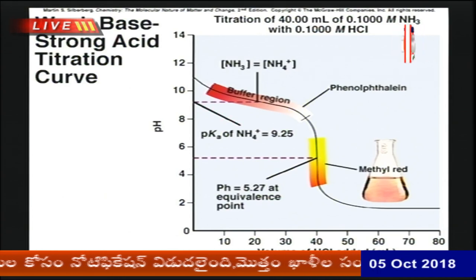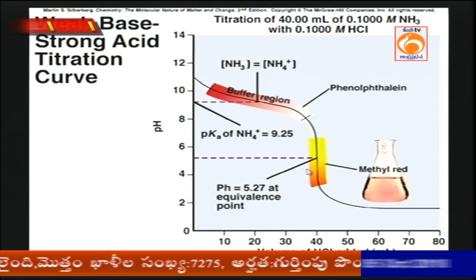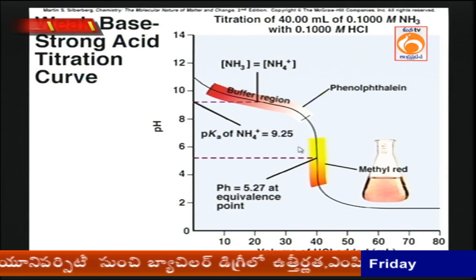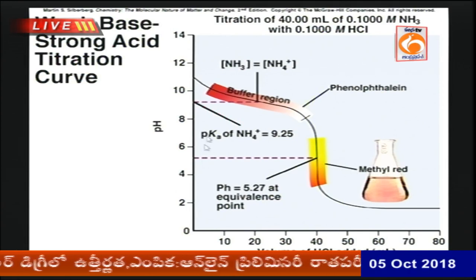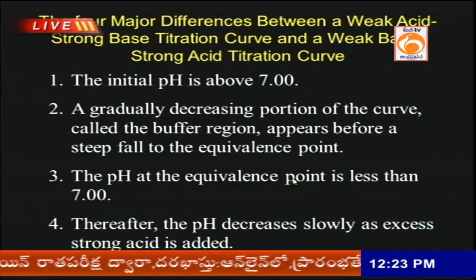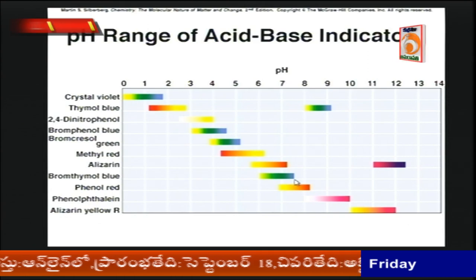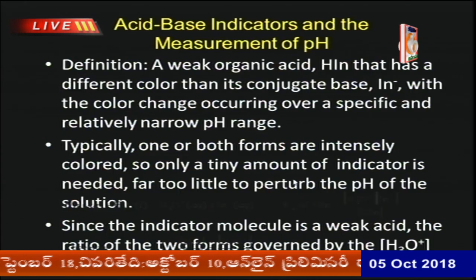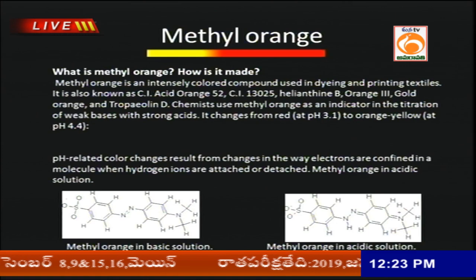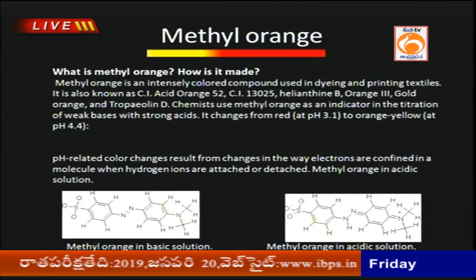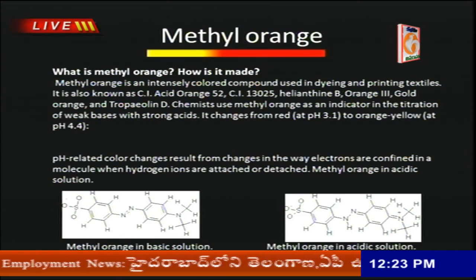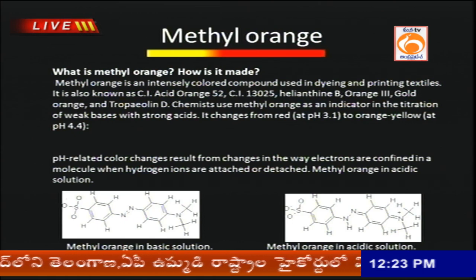For a titration between a weak base and a strong acid, the indicator used is methyl red because the equivalence point is between pH 4 to 6, which falls within methyl red's pH range. The functioning of indicators can be understood using the quinonoid theory and the benzenoid theory. This concludes the volumetric analysis section.